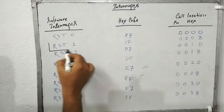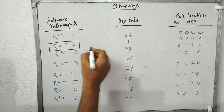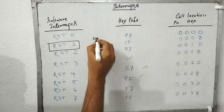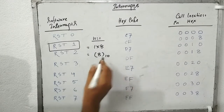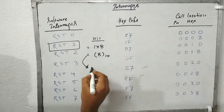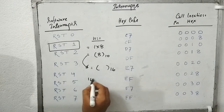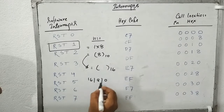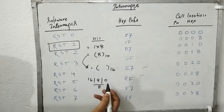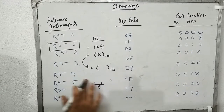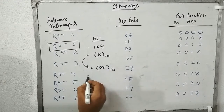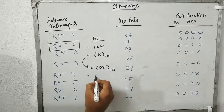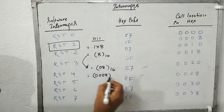Let's take the first one: RST 1, where N equals 1. So 1 × 8 = 8. Now convert 8 into hexadecimal: 8 divided by 16 gives quotient 0 and remainder 8. So the result is simply 8. Converting to a 16-bit address gives 0008.